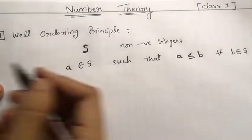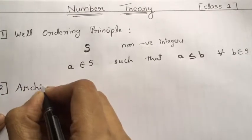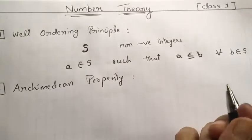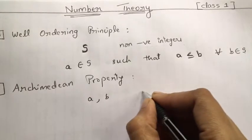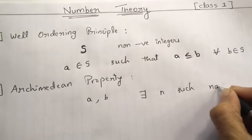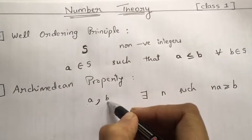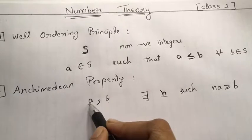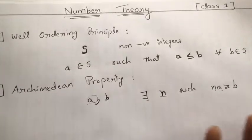That's the well-ordering principle. Next is the Archimedean property. If I have any two positive integers a and b, then there exists another positive integer n such that n times a is greater than or equal to b.